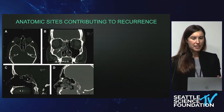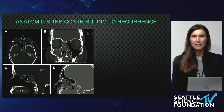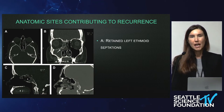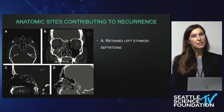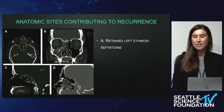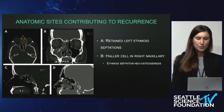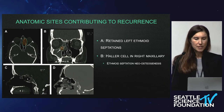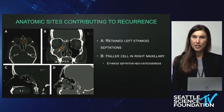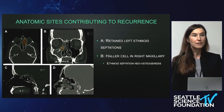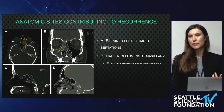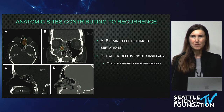I want to highlight a couple of anatomic sites contributing to recurrence — some of these have been talked about before. One of them is retained ethmoid septations. In revision surgery, this is a challenge because they can become neo-osteogenic or thickened bone, as you can see here in this left ethmoid. Also, Haller cells — here in the right maxillary — you can also see retained septations and neo-osteogenesis because it's becoming thick. So you're going to have a plan that this may be something you can't just remove with a simple through-cut; you may need to remove it with something like a Kerrison.